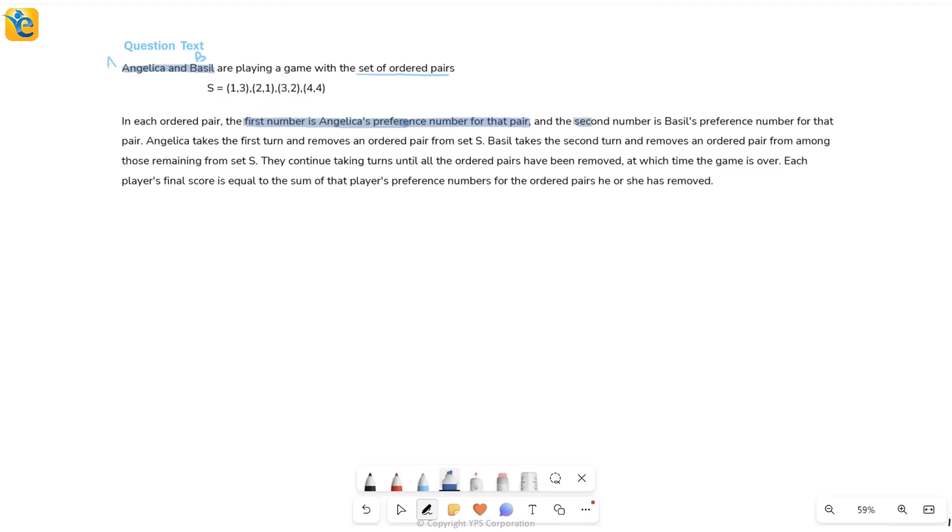Then it tells you also that the second number is Basil's preference number for that pair. So again, in the first pair, if I see the 1,3, then 3 is the preference number for Basil in this particular pair and so on. Now then, four pairs, four preference numbers for each person and that's what we have here. Now read further.